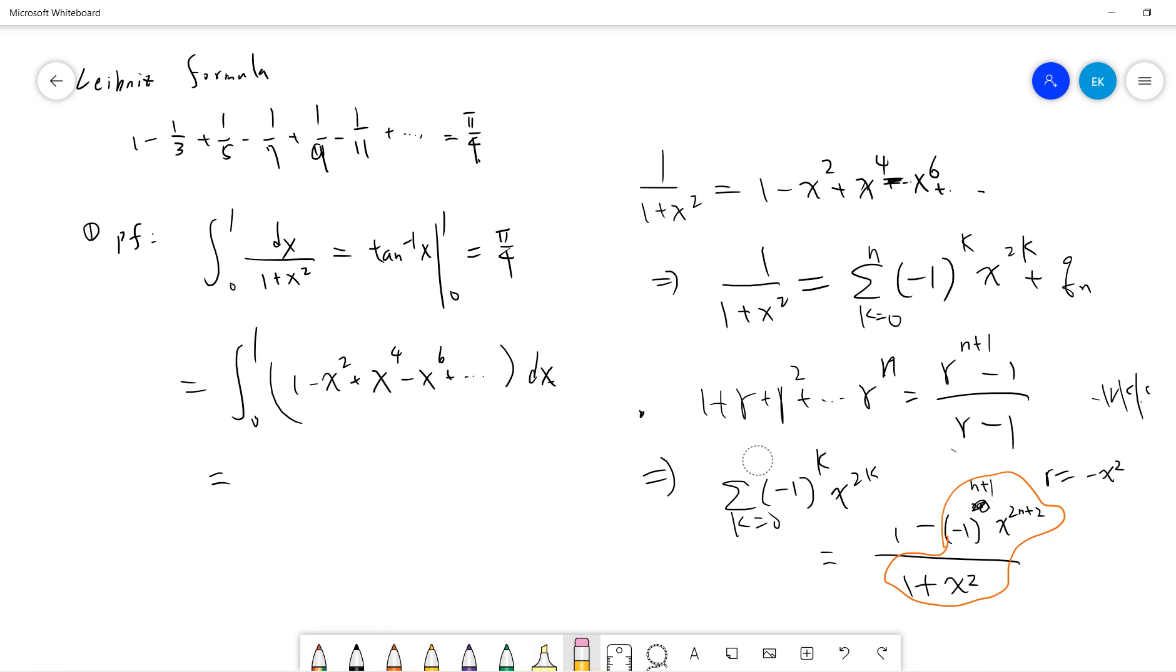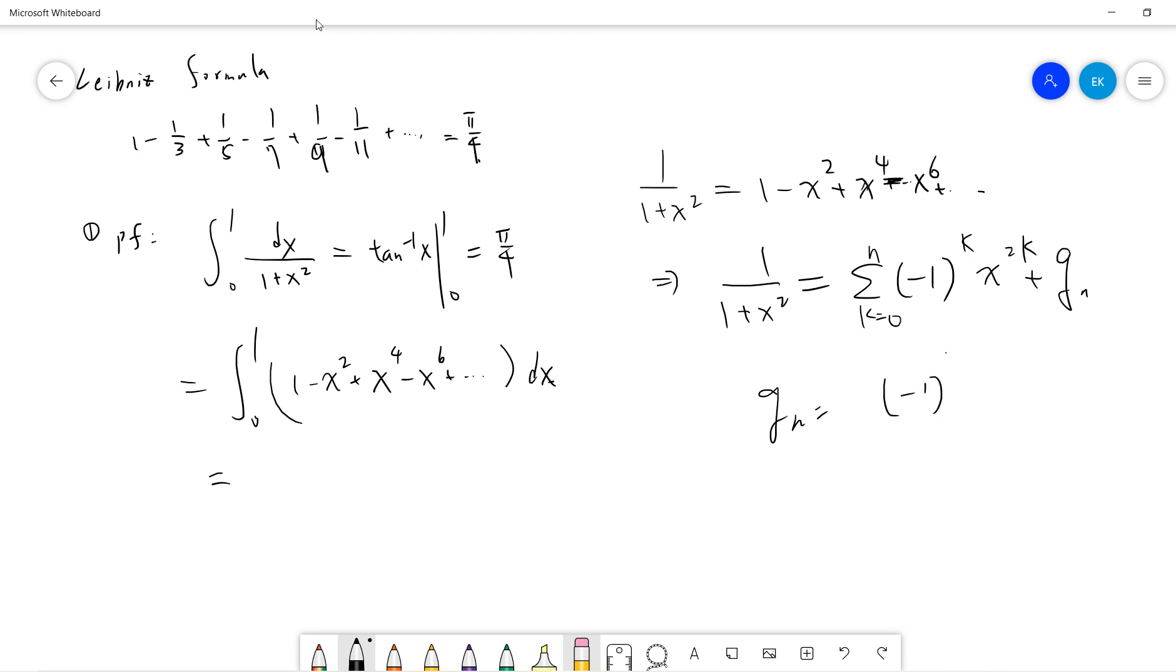This is a finite sum. So qn is (-1)^(n+1) x^(2n+2)/(1+x²). Then we do the integration. We integrate the first term, and this is a finite sum.